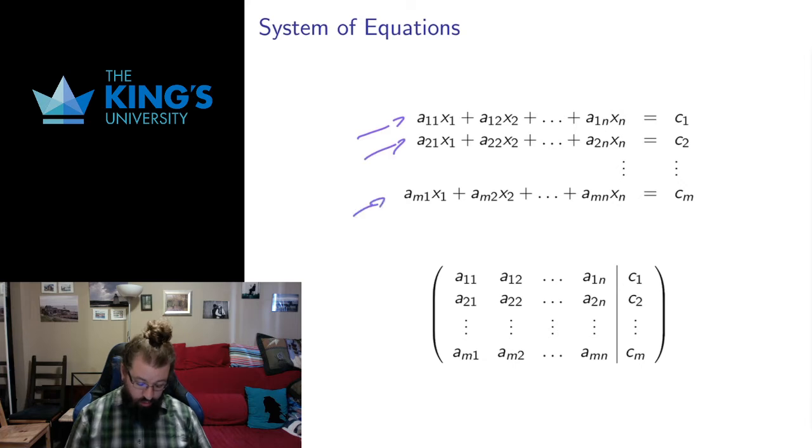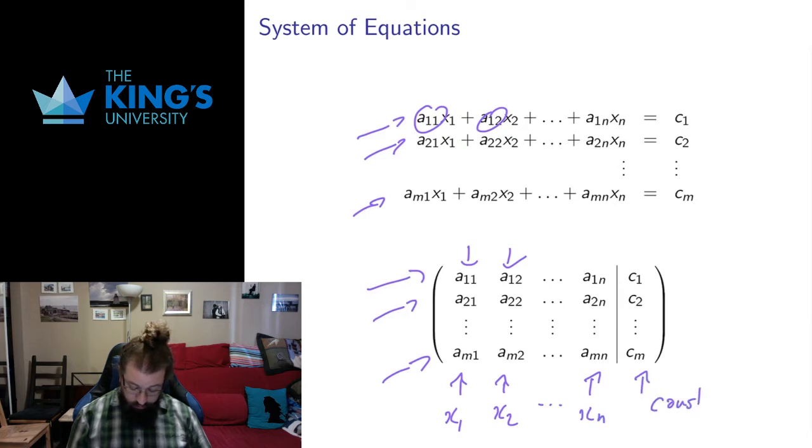How do we do this? Well if we have some number of equations, each equation becomes a row in the matrix. And the columns are the constants. This a11 shows up here, this a12 shows up there, so forth and so on. The variables are now missing. The variables are implicit, that this column is for x1, this column is for x2 all the way down, this column is for xn, and this column is for the constant. So that positional thing now keeps track of the variables, and this line keeps track of the equals sign.